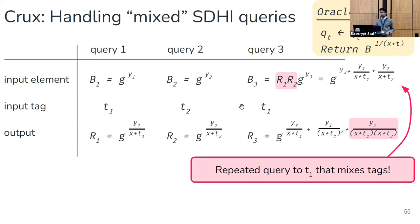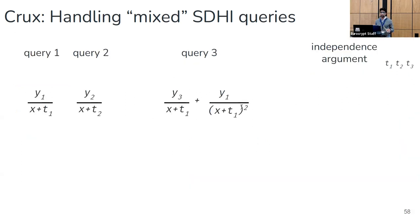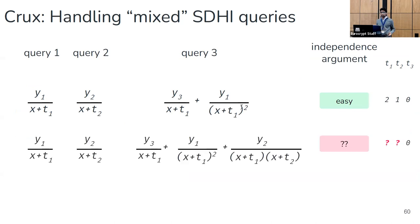In our reduction to the uber assumption we need to show linear independence of these exponents, and it's these mixed terms that cause problems. Without mixed terms, looking only at exponents as rational fractions, the independence argument is somewhat easy — we know the adversary can only create two evaluations under tag t1 and one evaluation under tag t2. But for the mixed query transcript, the independence argument for these rational fractions isn't so clear — in particular, it isn't clear if this mixed term will be helpful to produce a new evaluation for tag 2 even though only one query to tag 2 was made.